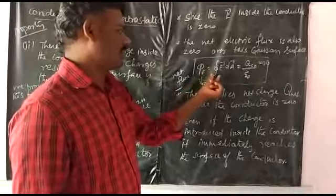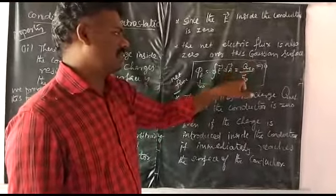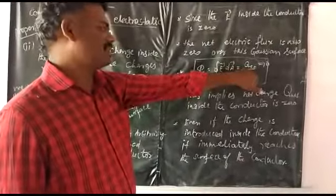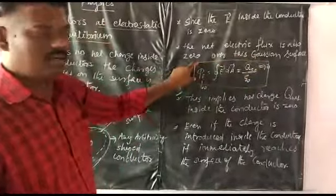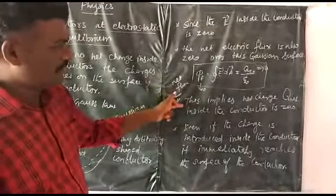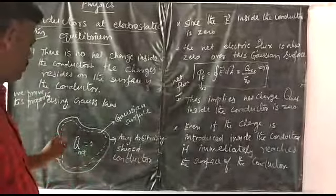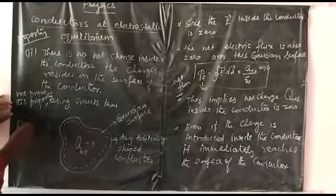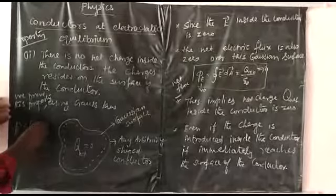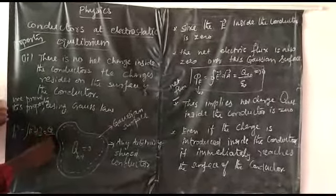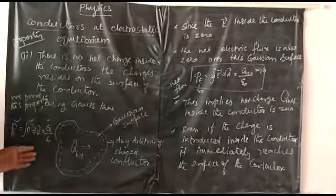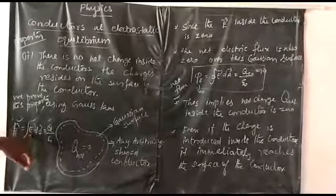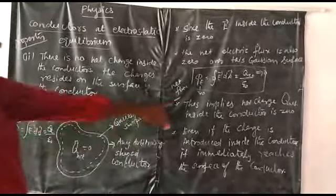The total flux is given by the closed integral of E·dA = Q_net / ε₀. If the total electric flux on the Gaussian surface is zero, then the net charge enclosed in the Gaussian surface is zero. So Q = 0 means the total flux is zero. This implies the net charge Q inside the conductor is zero: flux is zero because the electric field inside the conductor is zero, and therefore the total charge enclosed is also zero.